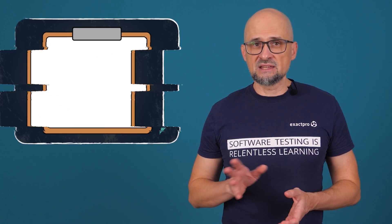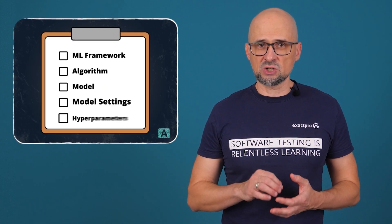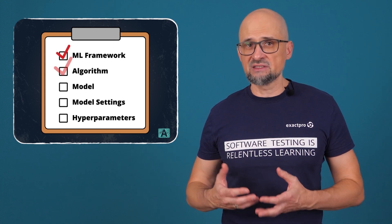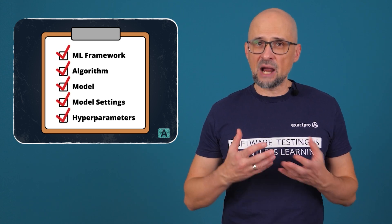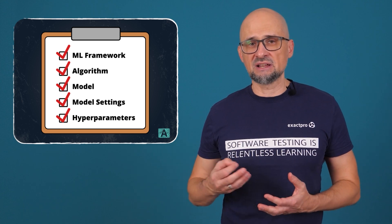Then we have machine learning model testing. Its objective is to confirm meeting the specified performance criteria, including functional and non-functional ones. This step also has to make sure that the choices of machine learning framework, algorithm, model, model settings, and hyperparameters are as optimal as possible. If applicable, machine learning model testing may also include testing to achieve white-box coverage criteria. The selected model is later integrated with other AI and non-AI components.